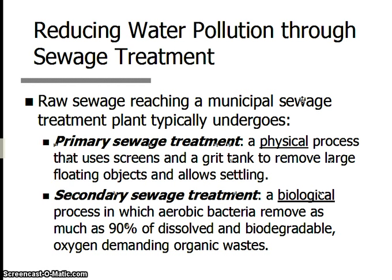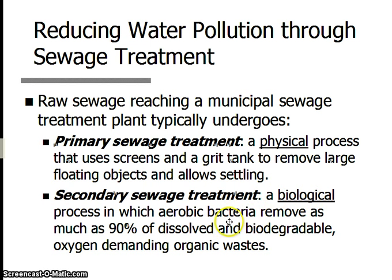Pause the video here if you need to write these things down. Primary treatment is basically physical — something like a screen or a settling tank, any physical process happening to the water and all the gunk in it. Secondary sewage treatment is a biological process, meaning we take advantage of living things — bacteria — to eat up all of that extra nitrate and phosphate, all of that extra nutrition. What do they need? A whole bunch of oxygen to do that. So wherever you see lots of bubbles, that is a secondary process.